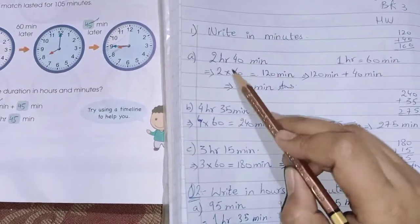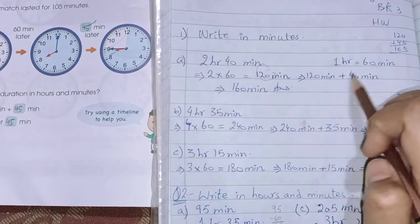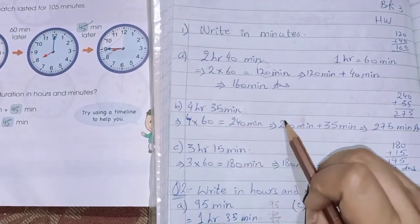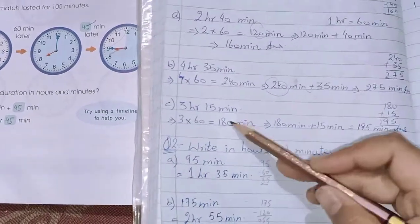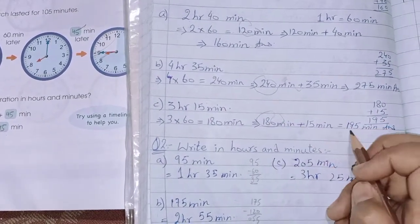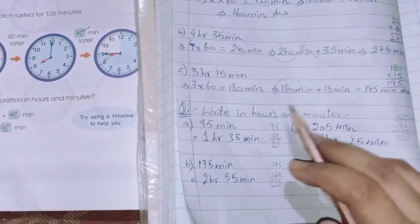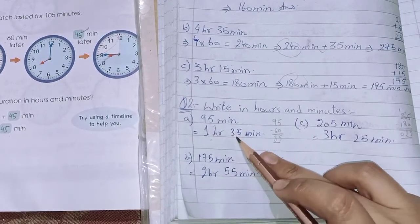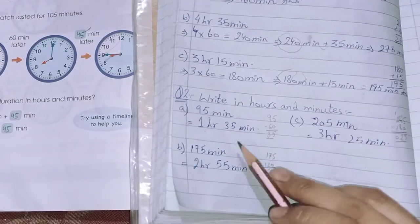Converting hours and minutes: 2 hours 40 minutes = 120 + 40 = 160 minutes. 4 hours 35 minutes = 240 + 35 = 275 minutes. 3 hours 15 minutes = 180 + 15 = 195 minutes. 95 minutes = 1 hour 35 minutes. 205 minutes = 3 hours 25 minutes.